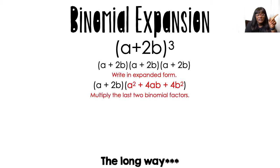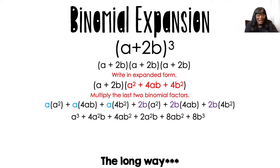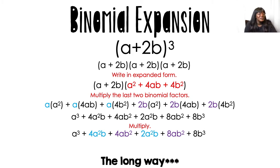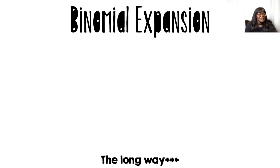Then I would multiply the last one into what I just did. So A times A squared, A times 4AB, A times 4B squared. Then 2B times A squared, 2B times 4AB, 2B times 4B squared. It's a lot — it really looks like a lot. The method I'm about to show you, you're probably not going to like much better, but here we are. Then once I do that, I combine like terms. Once you simplify that, that's your answer. I don't like the long way. I like binomial expansion, but I just got to show you the long way anyway.